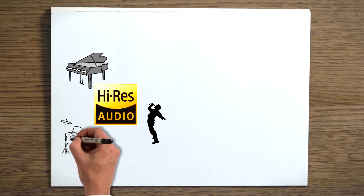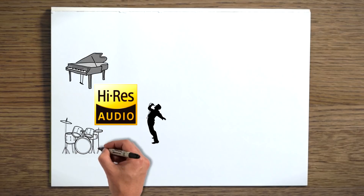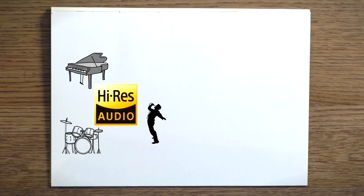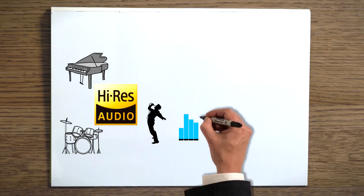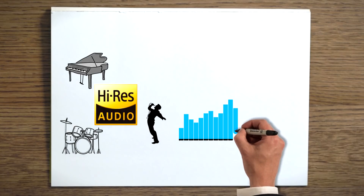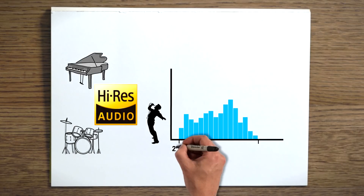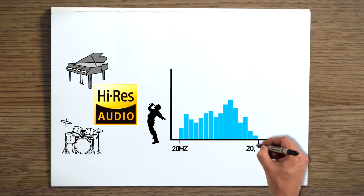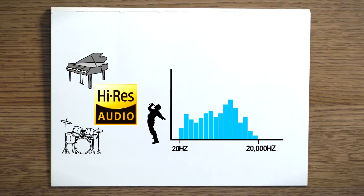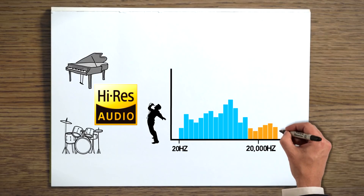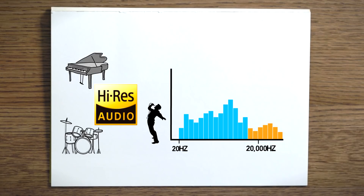The higher sampling frequency of perhaps 192 kHz — five times that of CD quality — means a much wider frequency range is captured and reproduced. When matched with an appropriate amplifier and speakers or headphones, audio frequencies greater than 20 kHz are reproduced, including ultra-high frequency harmonics: the subtle components of a sound which help to give, especially acoustic instruments, their character.